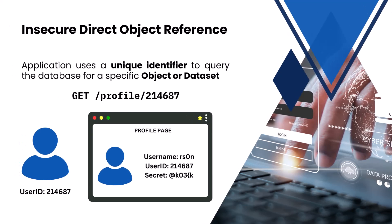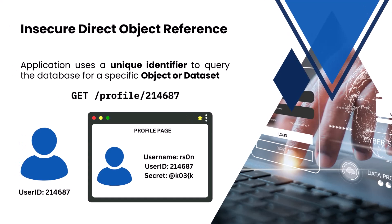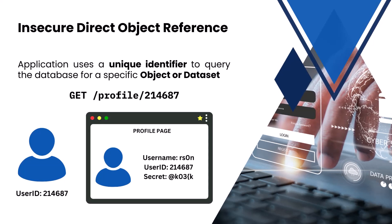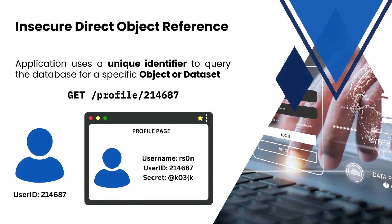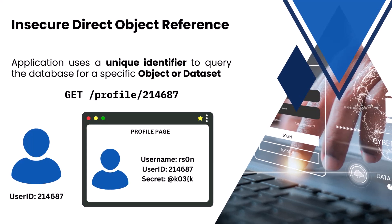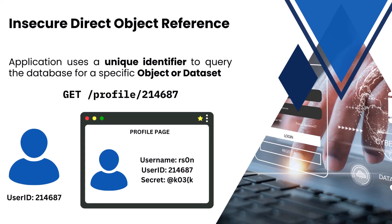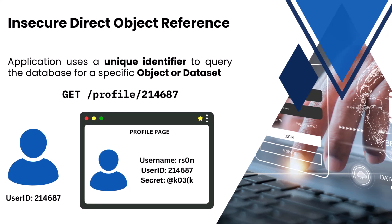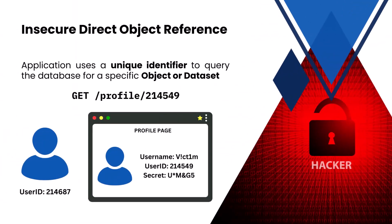Today I want to walk through a series of questions that you can ask yourself to help you find the best possible targets for IDOR vulnerabilities. An insecure direct object reference, or IDOR, attacks the part of an application that uses a unique identifier to pull a larger data set that includes sensitive information. An example of this is when an application takes your user ID and returns your profile page with your user information. If the developers don't validate that you have permission to access that larger data set, then you can leverage another user's ID and access their data.